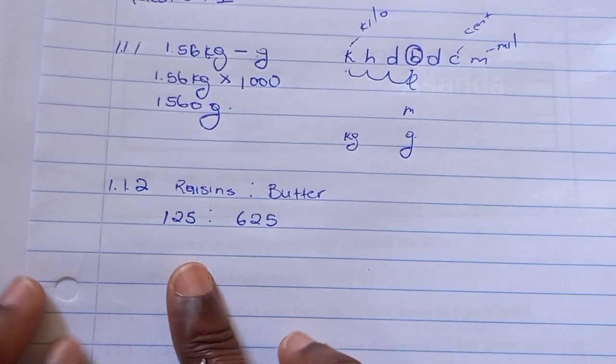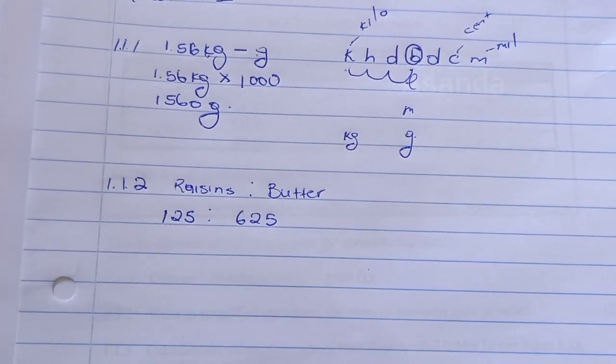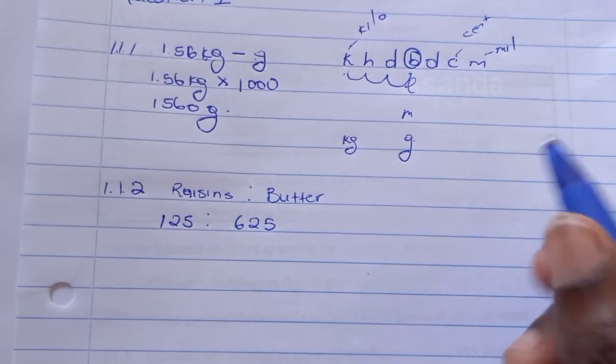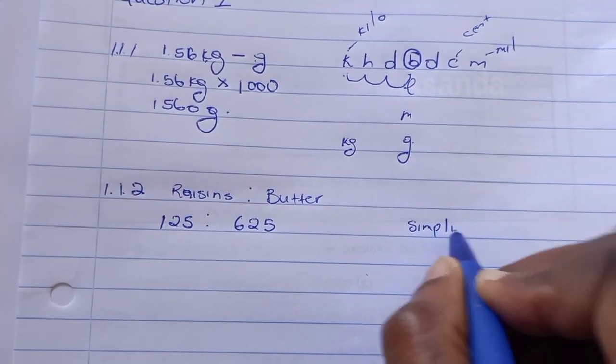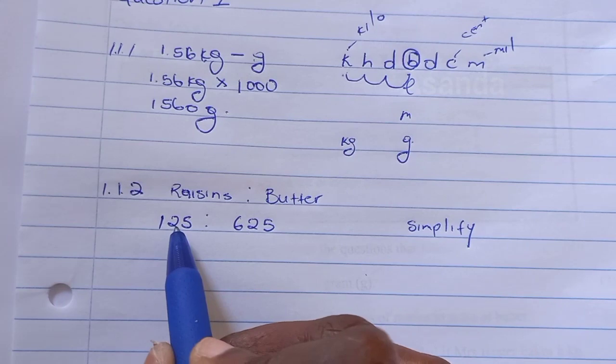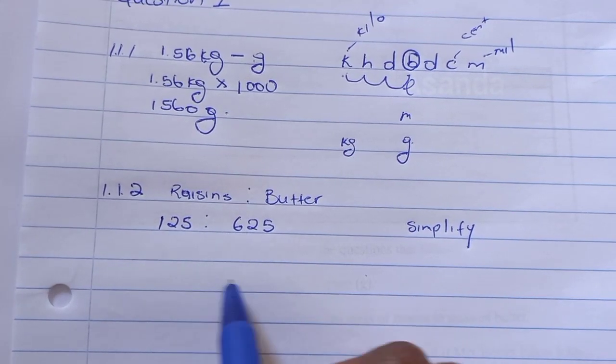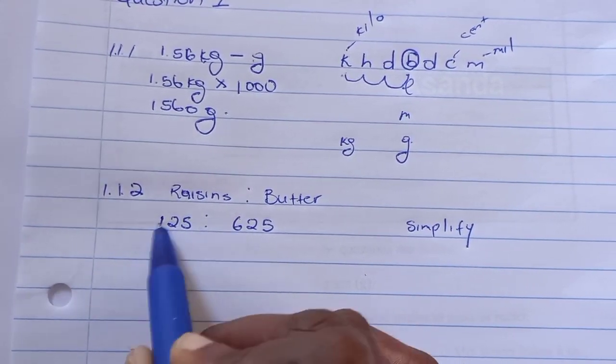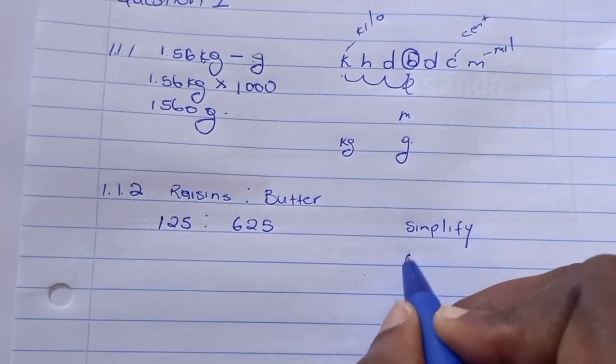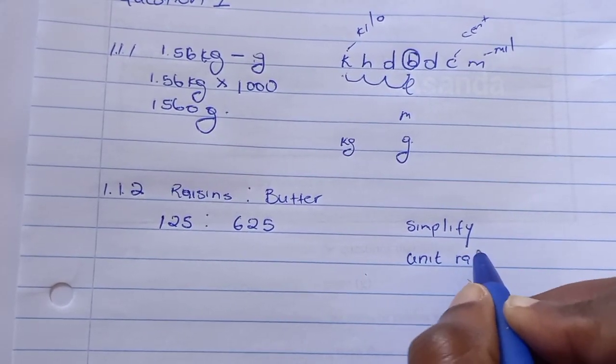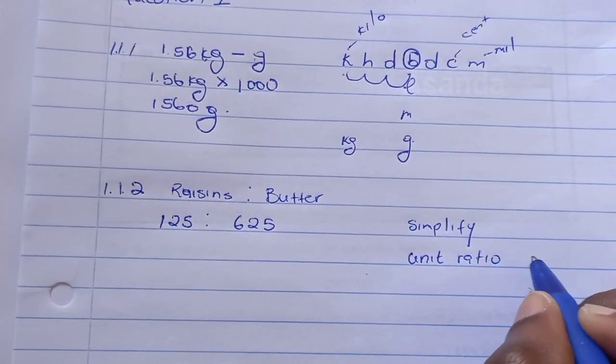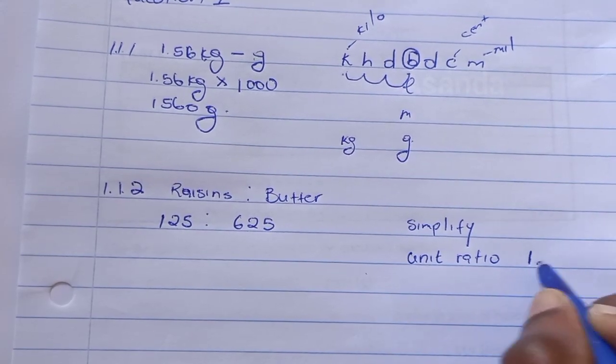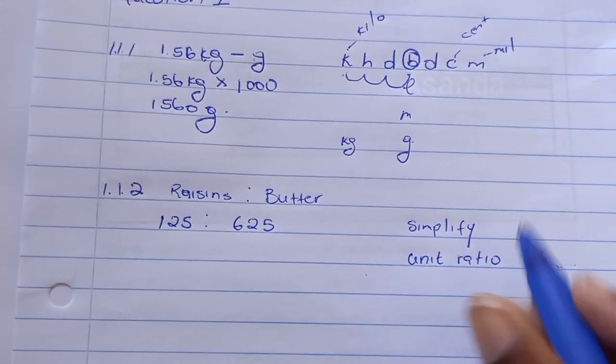Now when they say write this in a simplified ratio, there are two types of ratios they love using. One is simplify the ratio, where you have to make the numbers smaller by finding the number that goes into both. But then there's also a unit ratio. Don't confuse the two. A unit ratio is the one that starts with one.